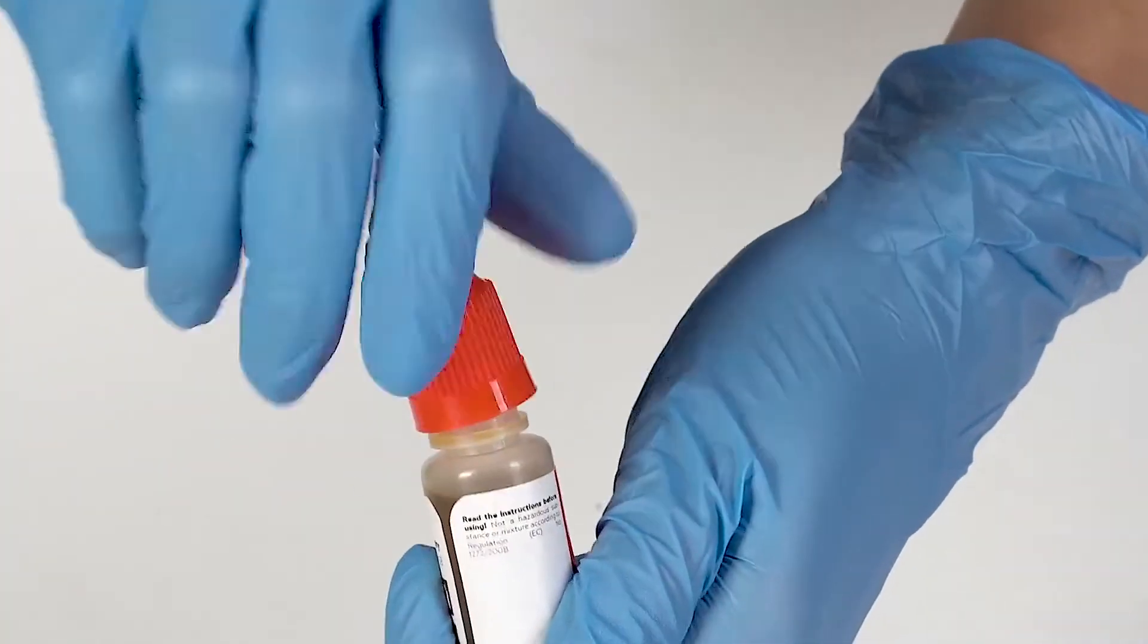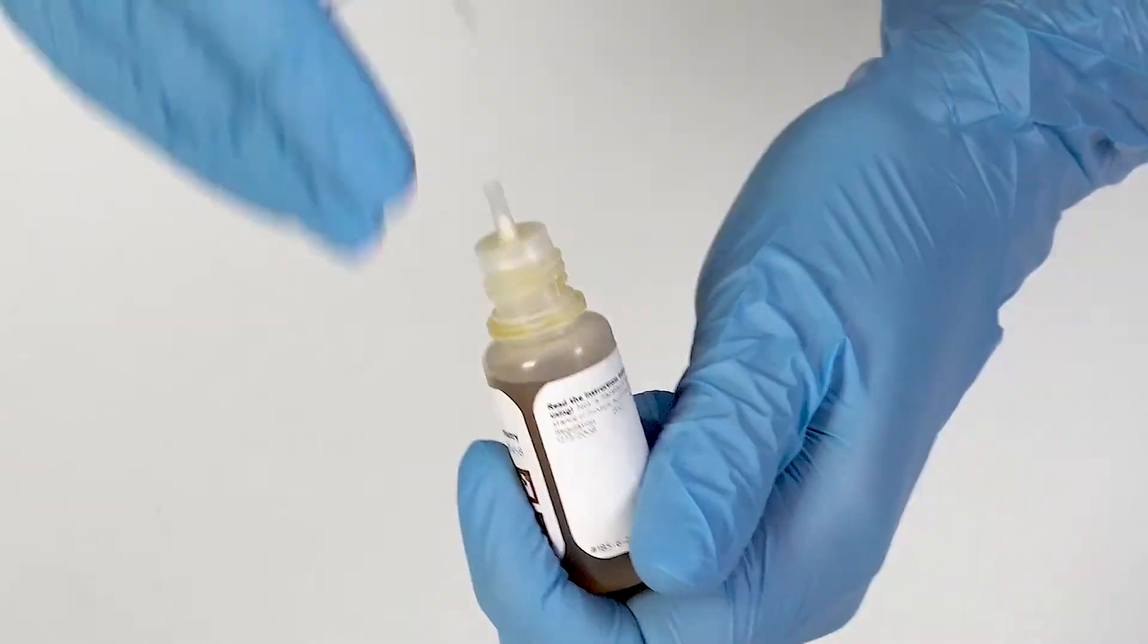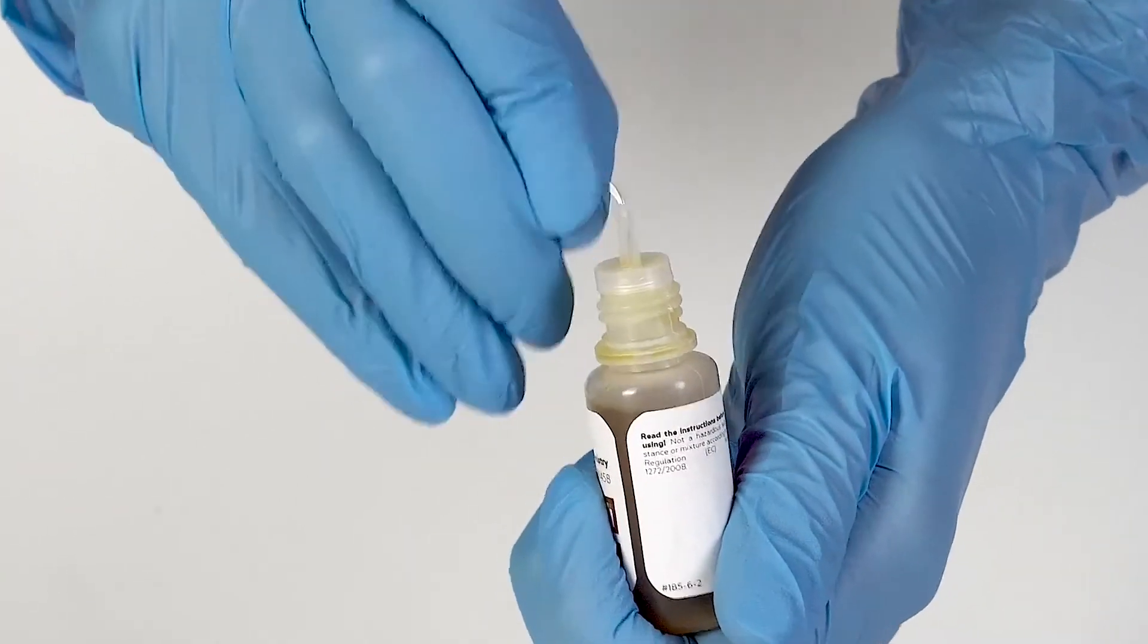To open a bottle containing a reagent, push the cap down and turn it. Pierce the bottle nozzle with an unbent paper clip.